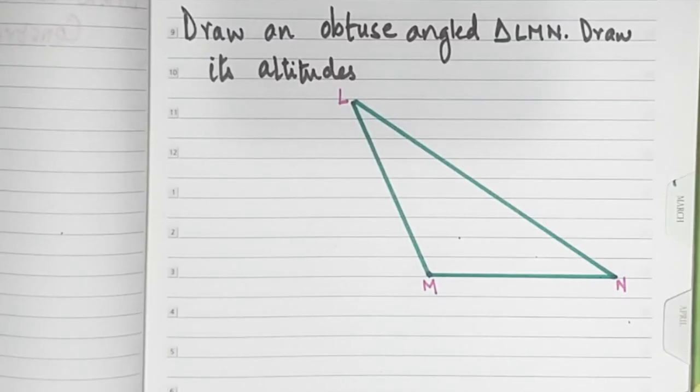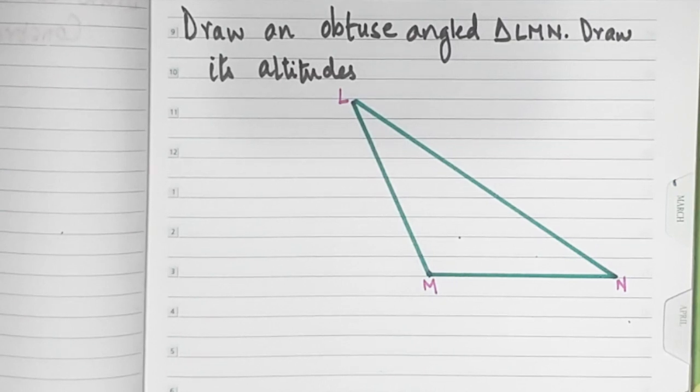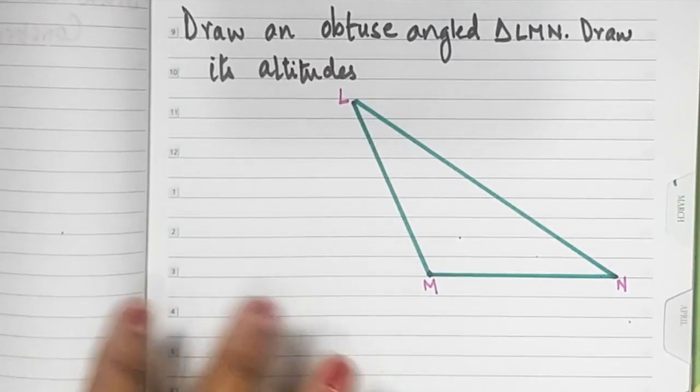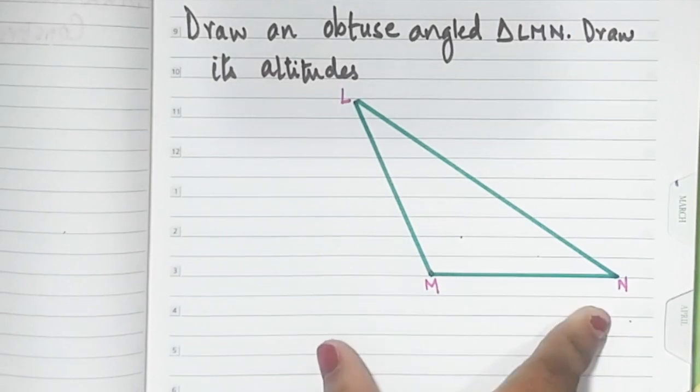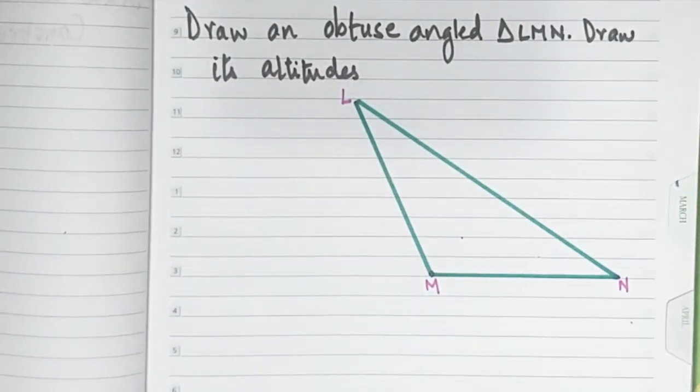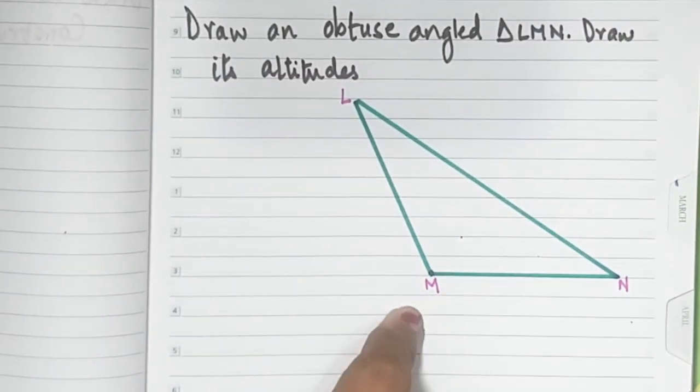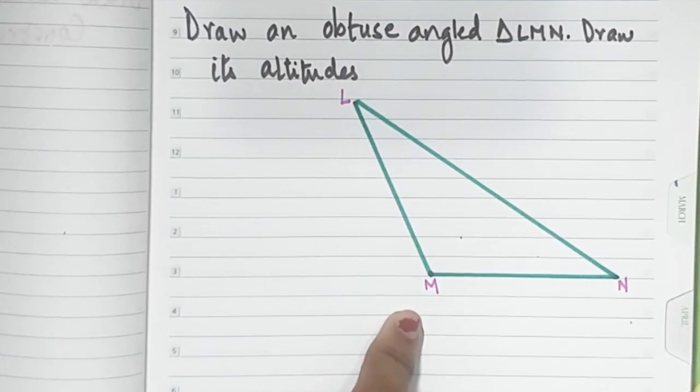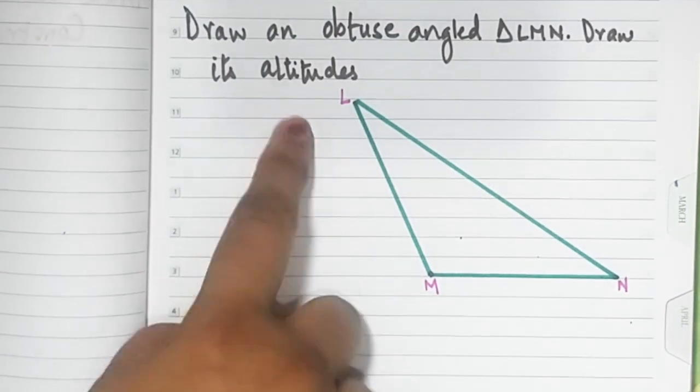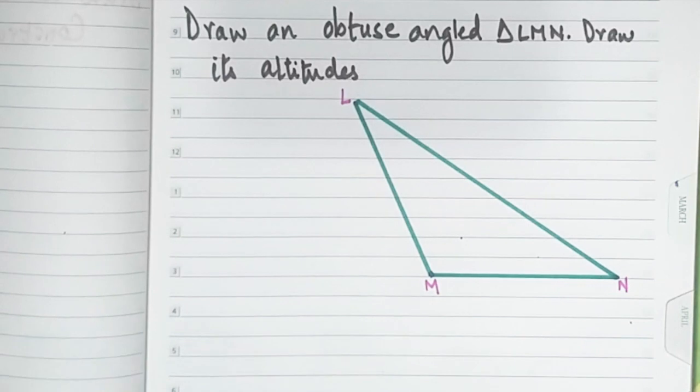Let's see how to draw the altitudes of an obtuse triangle. Here we have an obtuse triangle element. An obtuse triangle is a triangle wherein one angle measures more than 90 degrees. I have already drawn an obtuse triangle.